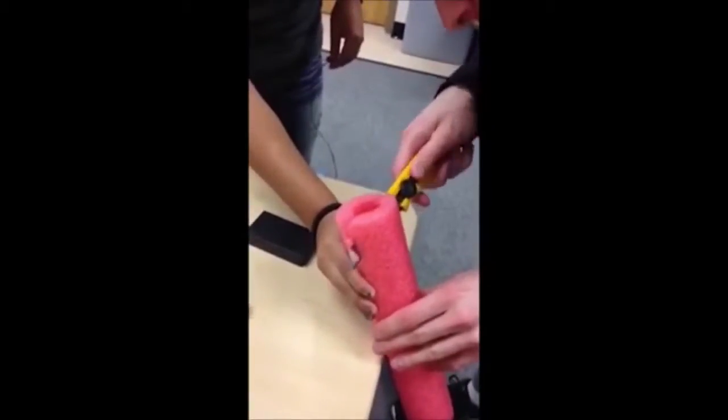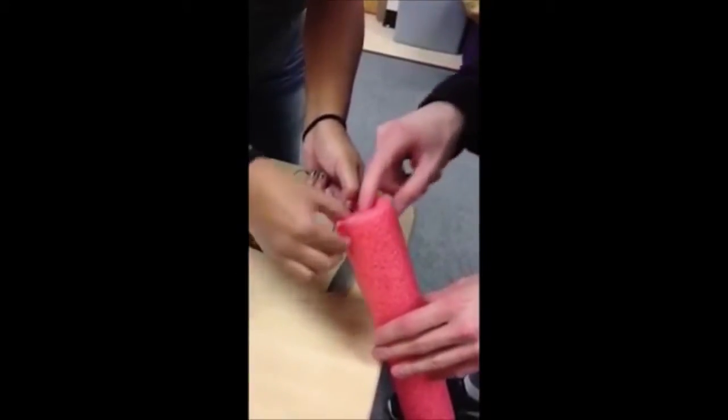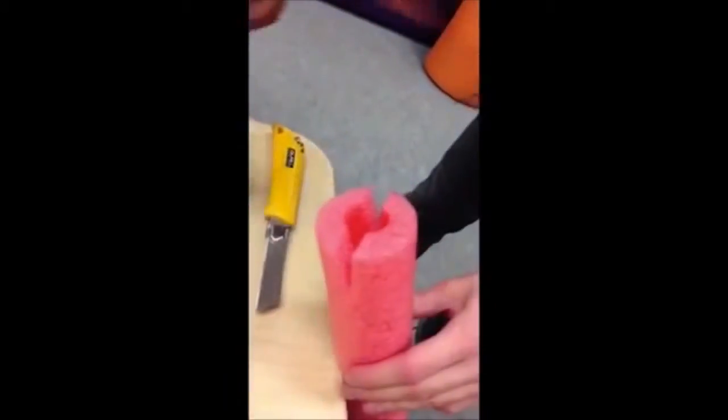We cut small parts out of the ends of the pool noodle as to insert the battery pack for the LED lights.